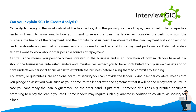Can you explain the five C's of credit analysis? The first C is Capacity to repay, which is the most critical of the five factors and is the primary source of repayment — cash. The prospective lender will want to know exactly how you intend to repay the loan, considering cash flow from the business, the timing of repayment, and the probability of successful repayment. Payment history on existing credit relationships — personal or commercial — is considered an indicator of future payment performance. Capital is the money you personally have invested in the business and is an indication of how much you have at risk should the business fail.